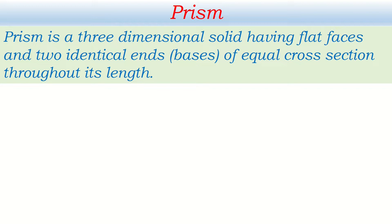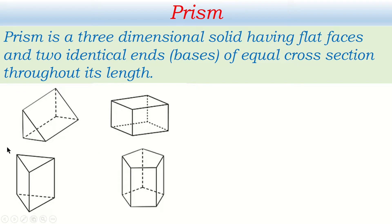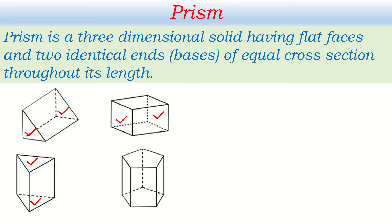Looking at diagrams of prisms, we can understand clearly that they are three-dimensional solids with length, width, and height. They all have flat faces — some have three, four, or five flat faces. All have two ends called bases, each with equal area, lying opposite to each other. This applies to triangular, rectangular, and pentagonal prisms alike.